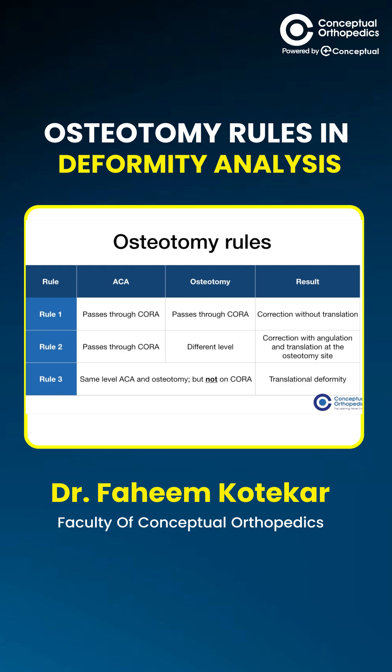From the preoperative planning — that is the apex, bone cut, and the correction — we can correct deformities through one of these osteotomy rules. Rule one is ideal, and rules two and three can be used when simpler alternatives are not available. It is to note that rules two and three will leave a secondary deformity, and this deformity may be mild and can be accepted in certain conditions.